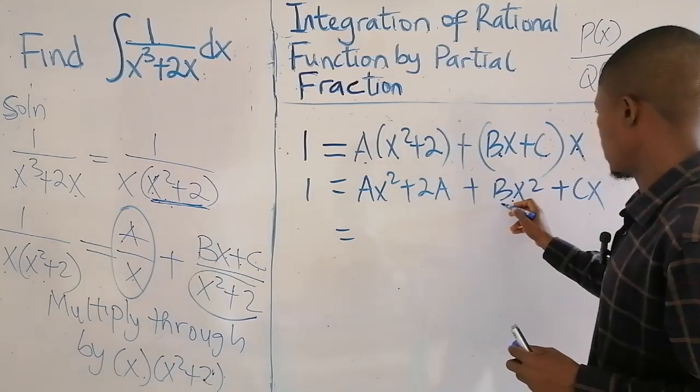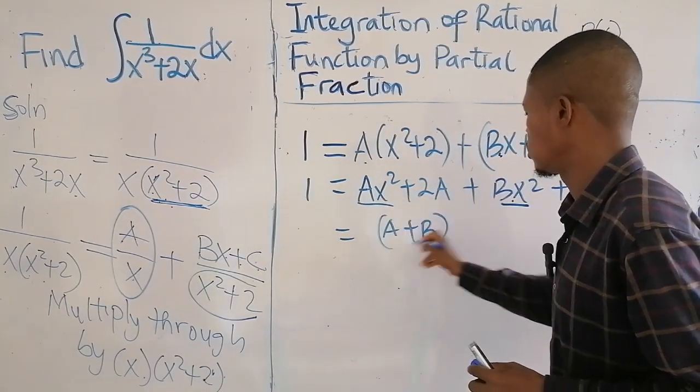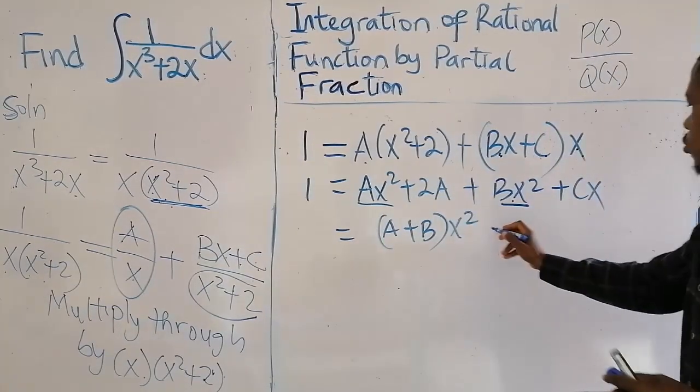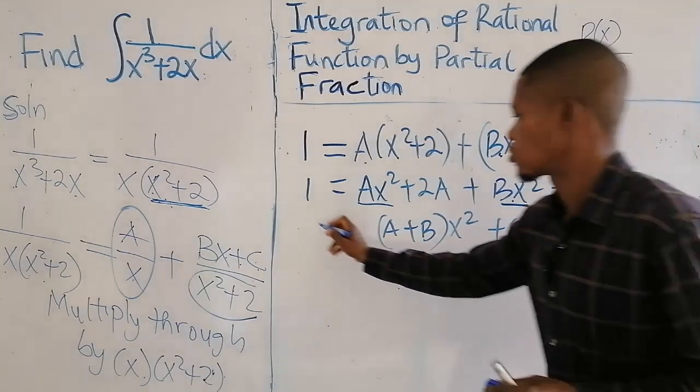So we now have, we can bring the X squared together and that will be A plus B times X squared. Then followed by CX and then followed by 2A. Plus 1.